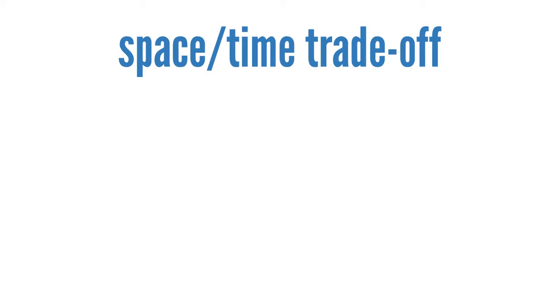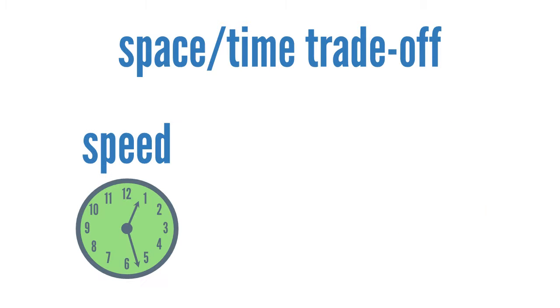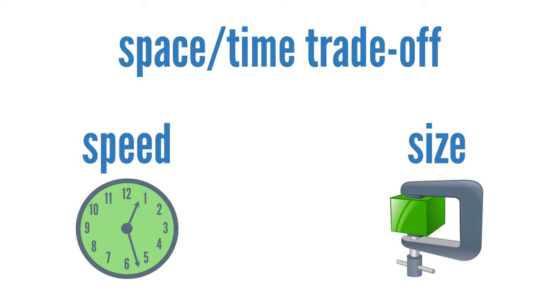All compression algorithms exhibit a space-time trade-off. Faster compression and decompression speeds come at the expense of smaller space savings. For example, an algorithm built for speed will not compress a file as much as an algorithm built to produce high compression ratios.